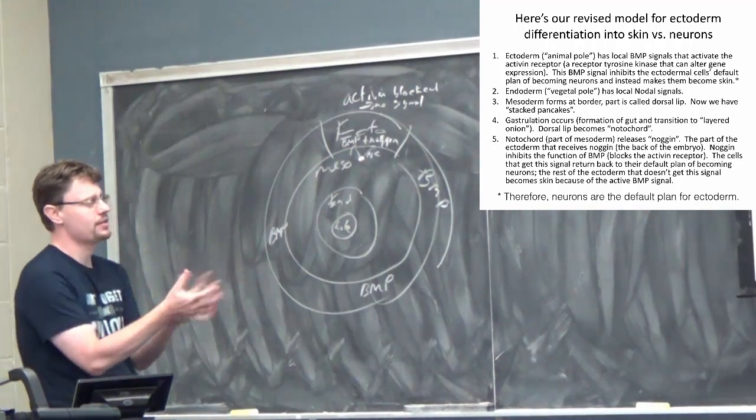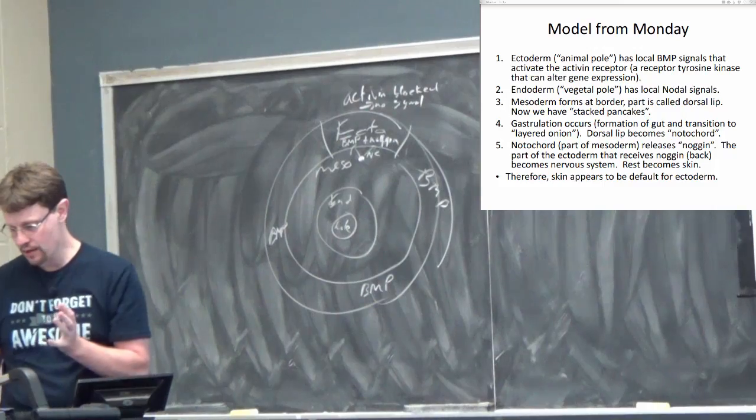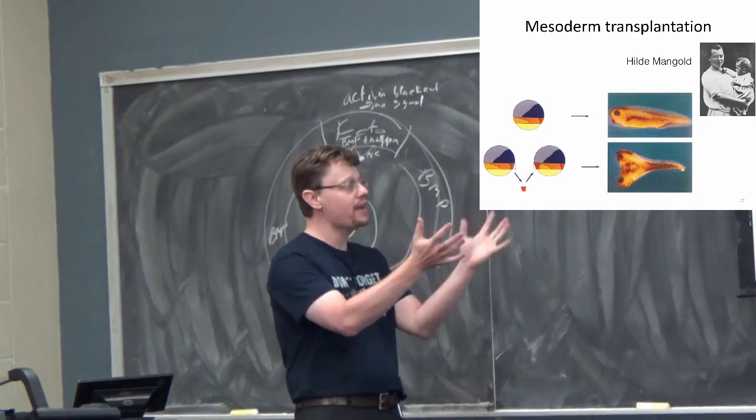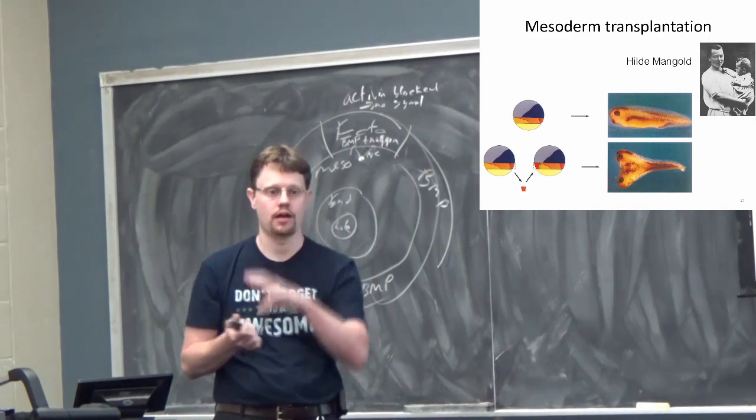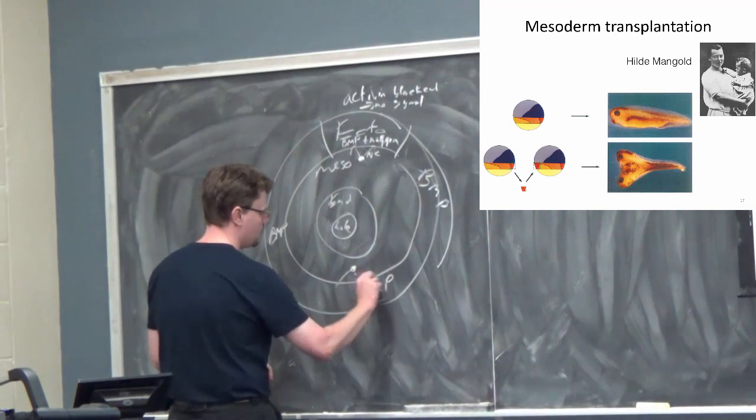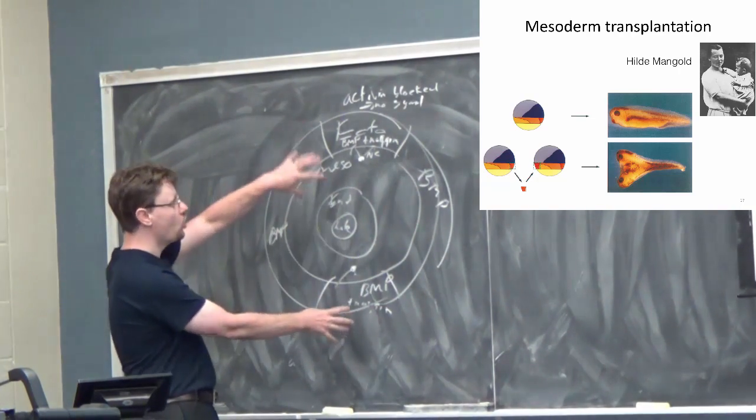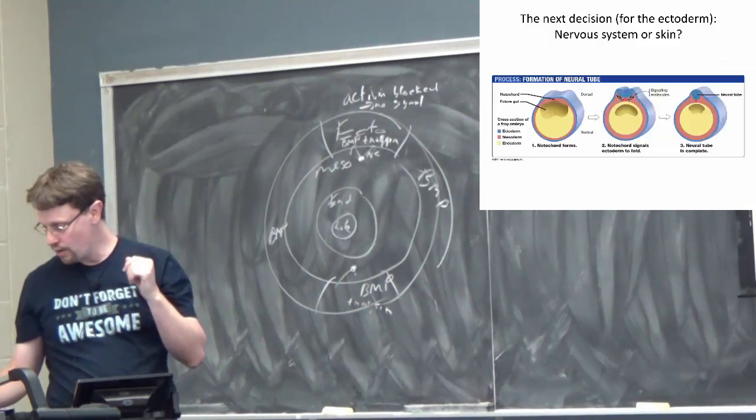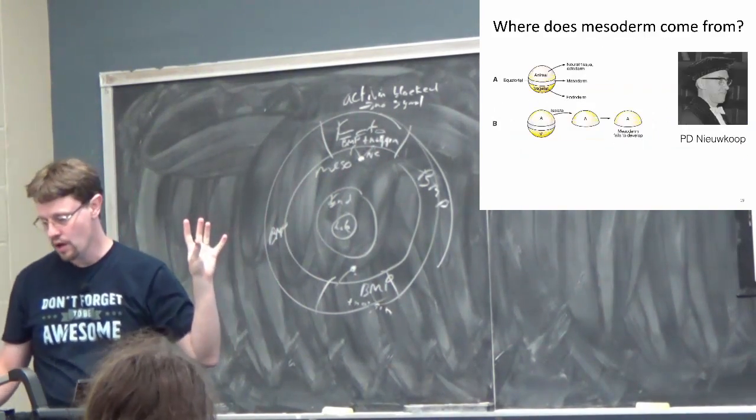Okay, so one of the things that I really love about this story is that we can go back to the old data from before. So if we go back to Hilda Mangold's data, why do we get two nervous systems when we have two dorsal lips and two notochords? Sure, yeah. Because there's two regions where the activin receptors are blocked. Yeah, exactly. We've got another notochord here, some more noggin being released. And so now in this zone, there's BMP plus noggin in these modified embryos. And so now, no signal going on there. Everywhere else along the sides, we're still getting skin.